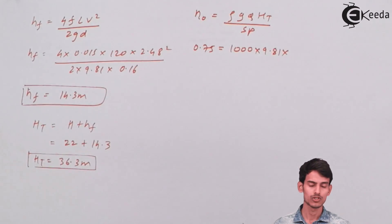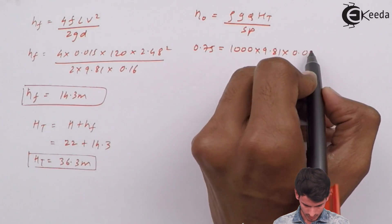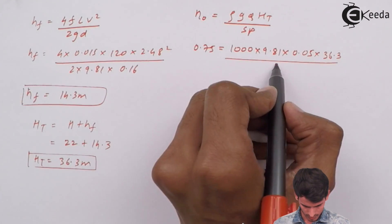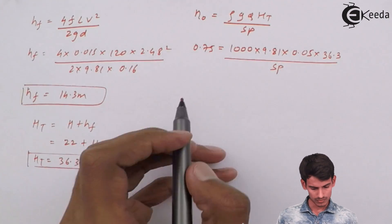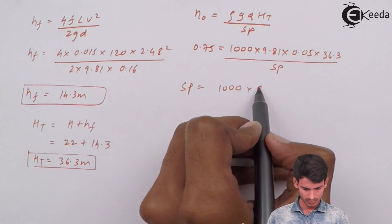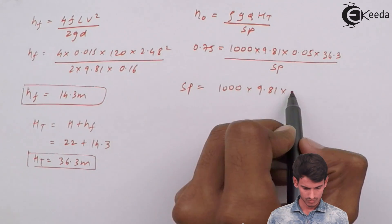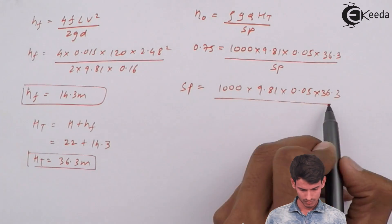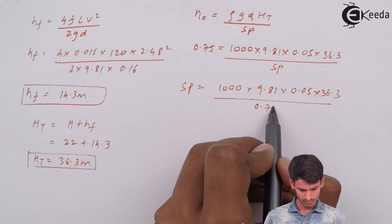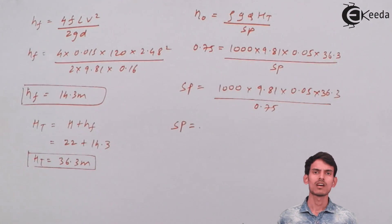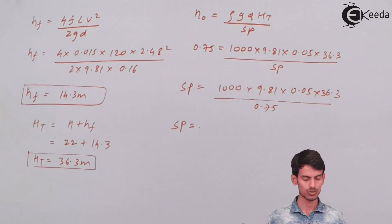The value of discharge Q is given as 0.05. Once you multiply all the values in the numerator and then divide by 0.75, you'll get the value of shaft power.